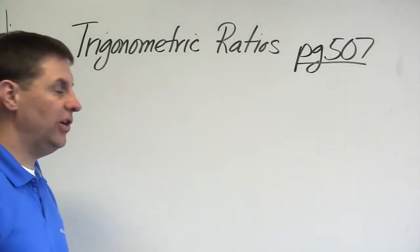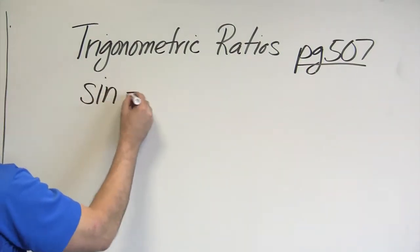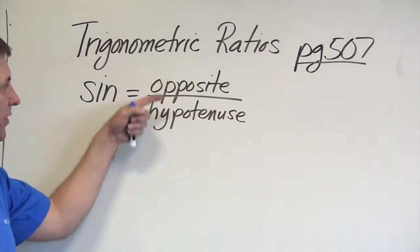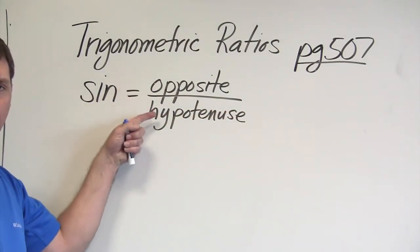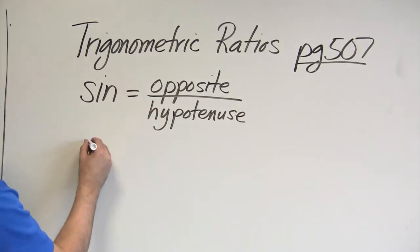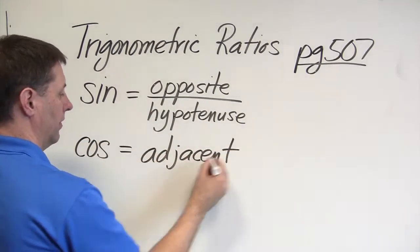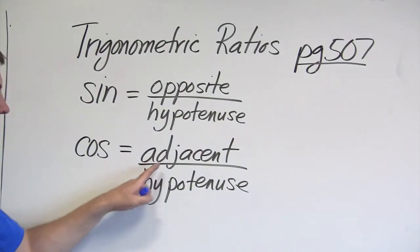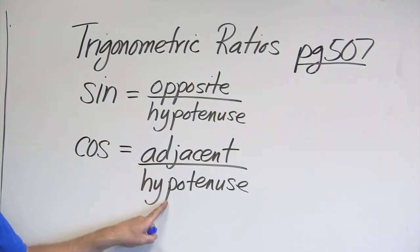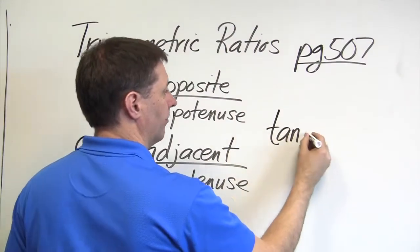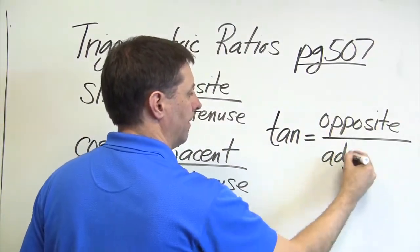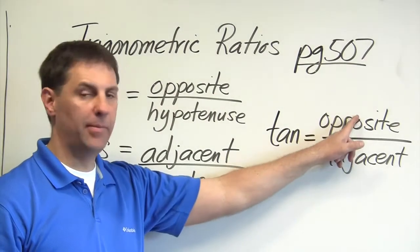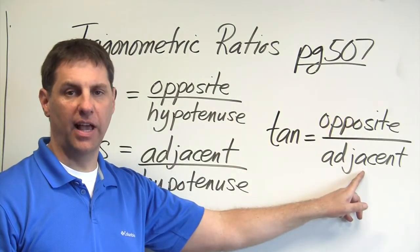The first trig ratio is sine — the opposite side over the hypotenuse. The second is cosine, which is adjacent over hypotenuse. The third ratio is tangent, which is the opposite side over the adjacent side.